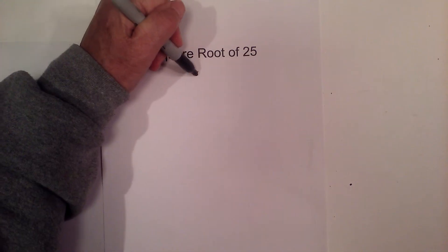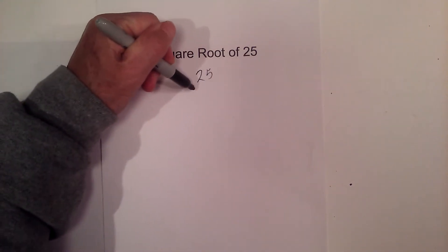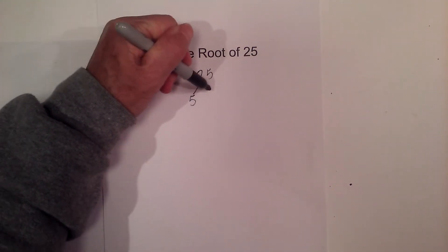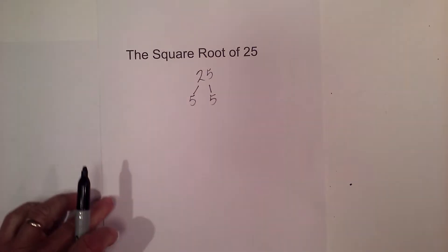In this video let's find the square root of 25 and I like to use a factor tree. So I'm going to begin with 25 and it is 5 times 5. That's the factor tree.